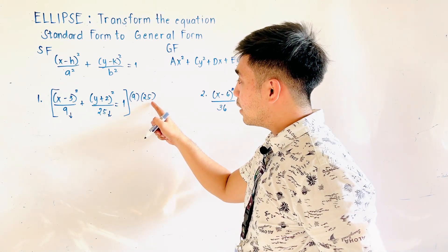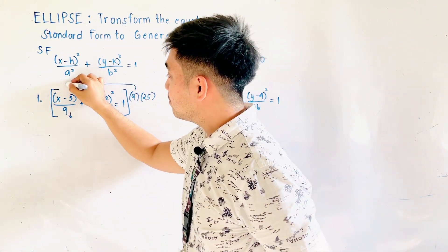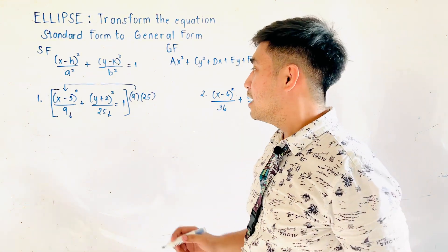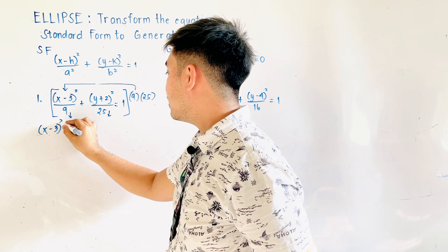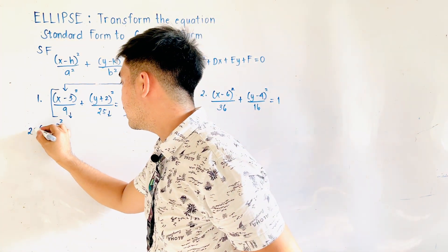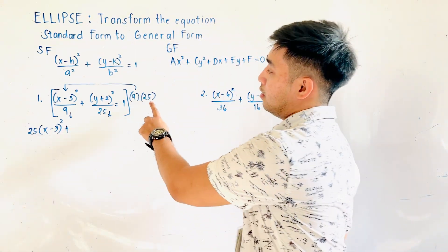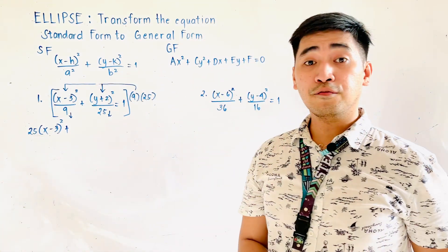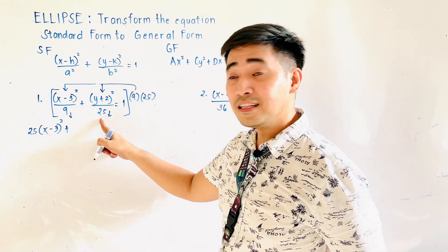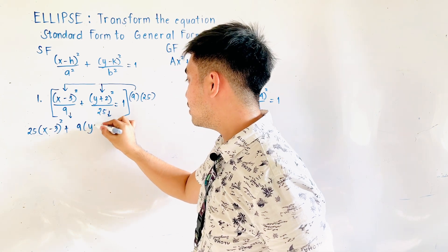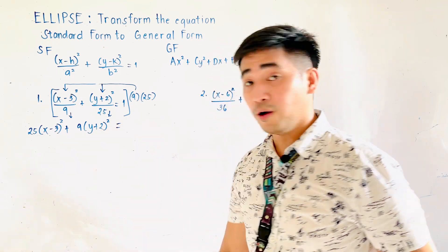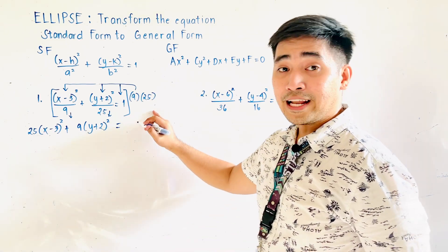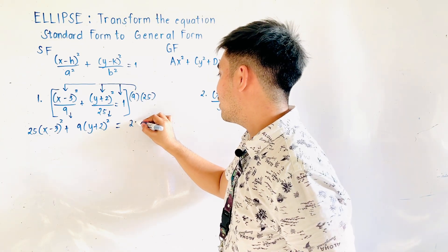Let's multiply. 9 times 25 times the first term — we cancel out 9 — so this becomes (x − 3)² multiplied by 25. Then 9 times 25 multiplied to the second term — we cancel out 25 — so it becomes 9 times (y + 2)². This is now equal to 9 times 25. What is 9 times 25? That is 225.